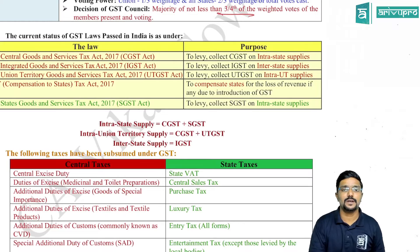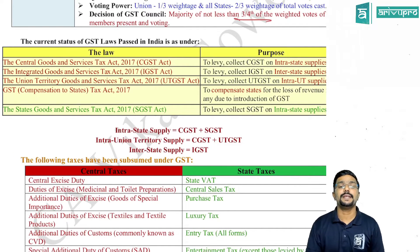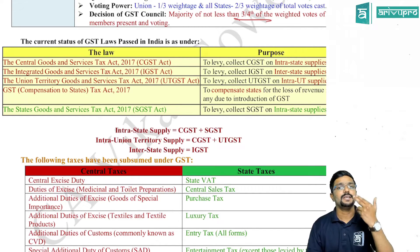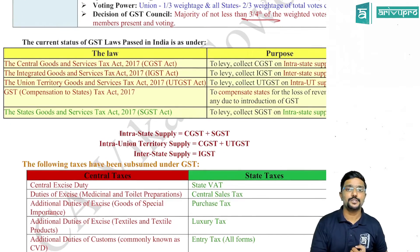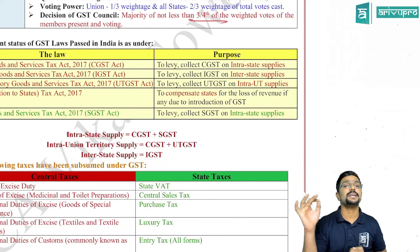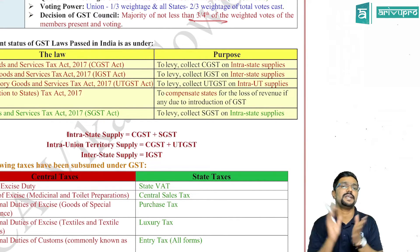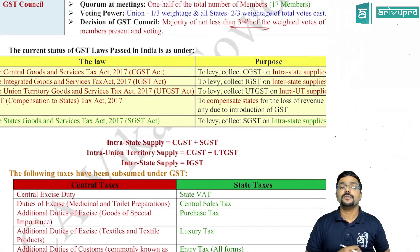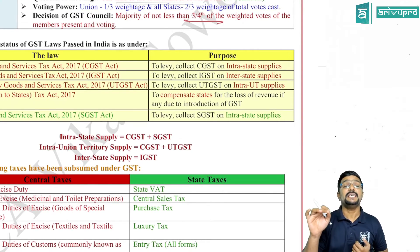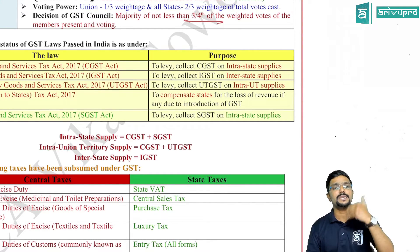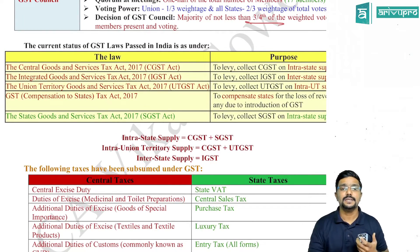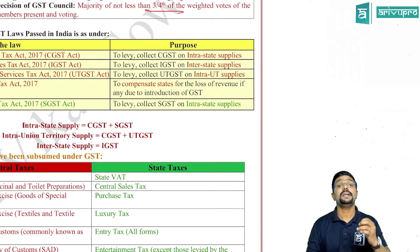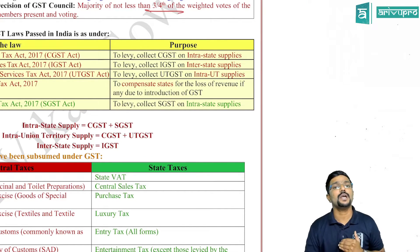Coming to the current status of GST law, there are five laws. The CGST Act is passed to levy and collect CGST on intra-state supply — that is, supply within the state. The IGST Act is passed to levy and collect IGST on interstate supply — that is, supply outside the state or union territory. The UTGST Act is passed to levy and collect UTGST on intra-union territory supplies — that is, supply within the same union territory.